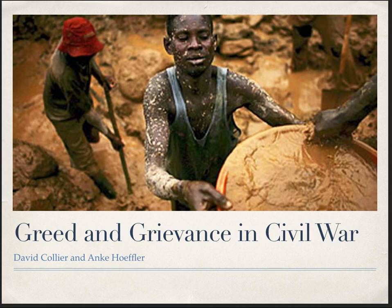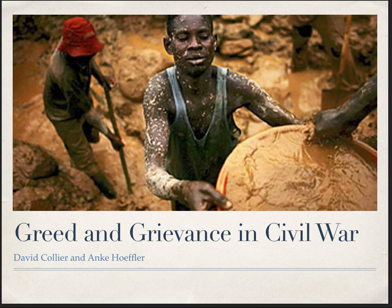Moving on to our main question for today: Collier and Hoffler's Greed and Grievance in Civil War. We're going to go over a parallel paper by Fearon and Laitin, which covers a very similar question. A couple of goals for today: first, I'd like you to understand and differentiate between theories of how civil wars start at the macro level — what characteristics of countries make war more likely and what mechanisms give rise to that danger. Second, I'd like you to consider how Collier and Hoffler come to such a different conclusion than Fearon and Laitin, and what operationalization of variables can teach us about interpreting social science papers.